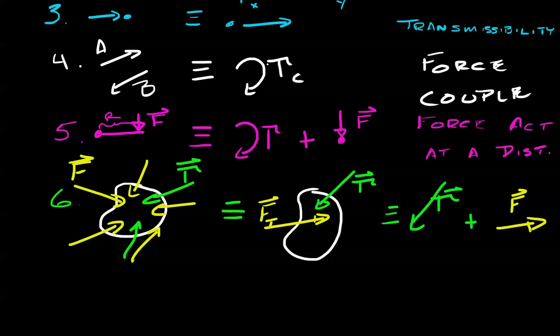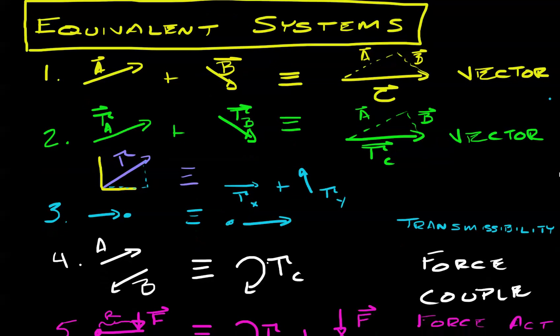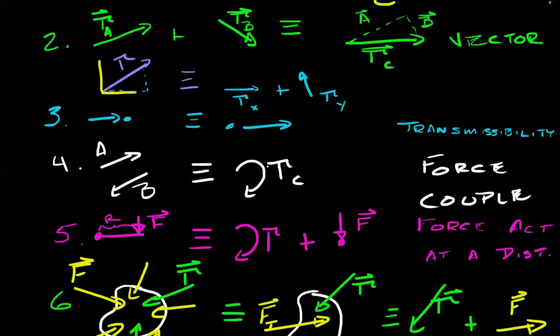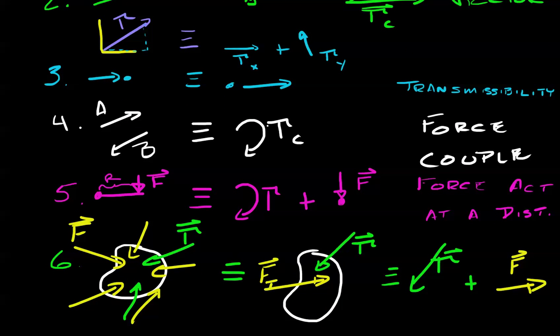In summary, we've covered six rules of equivalent systems that involve combining vectors both as forces and as torques, transmissibility, force couples, how to apply a force acting at a distance, and large systems with multiple forces and multiple torques. Next we'll cover wrenches. I look forward to seeing you.